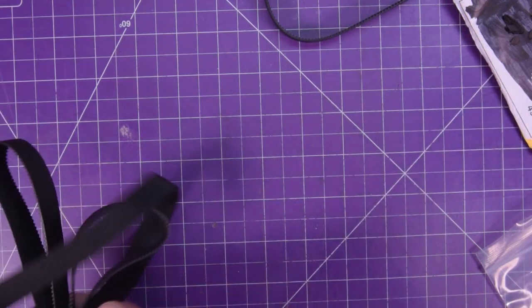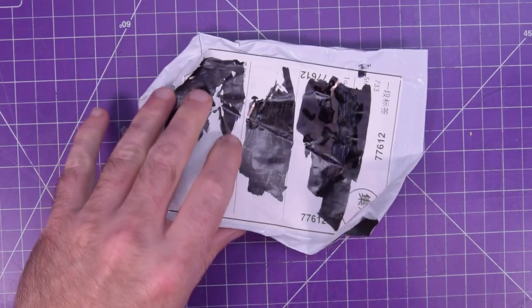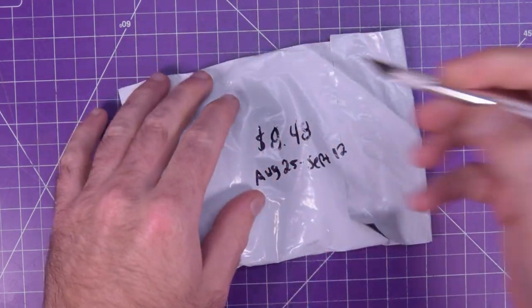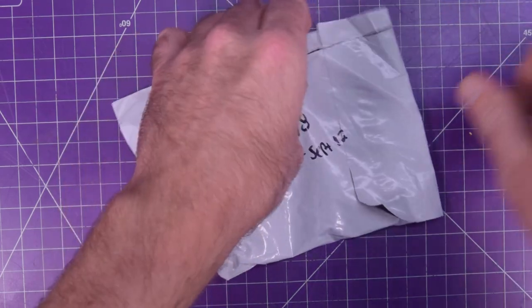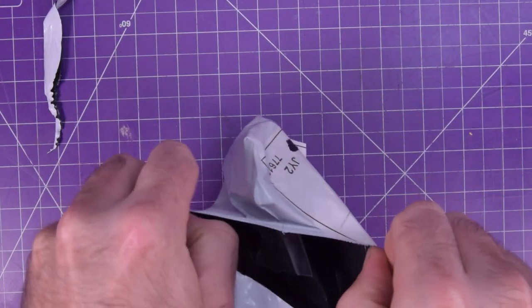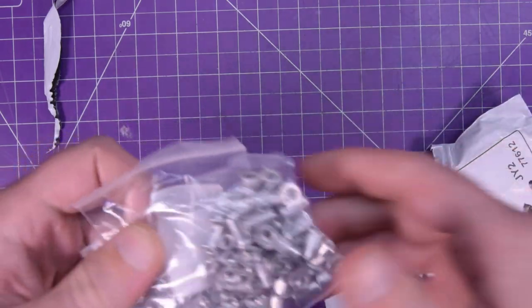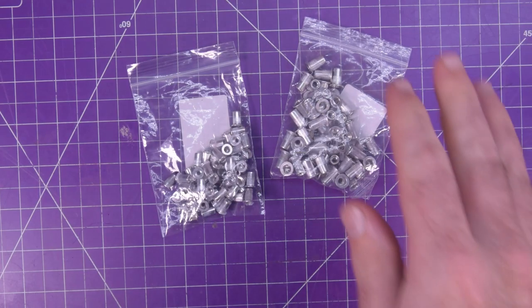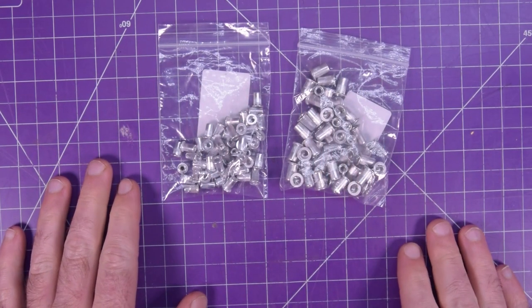Next one up is this one here. $8.48, August 25th ordered, September 12th arrived. I know what this is, and I'm not sure if there's actually the amount I ordered in here. Okay, maybe there is. All right, so these are rivet nuts.